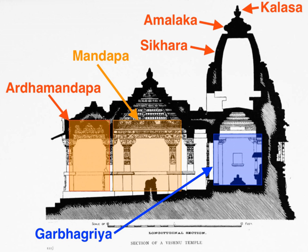The Kalinga style of architecture flourished in the eastern Indian state of Odisha and northern Andhra Pradesh. The style consists of three distinct types of temples: Rekha Deula, Pidha Deula, and Khakhara Deula. Deula means temple in the local language. The former two are associated with Vishnu, Surya and Shiva temples, while the third is mainly associated with Chamunda and Durga temples. The Rekha Deula and Khakhara Deula house the Sanctum Sanctorum, while the Pidha Deula constitutes outer dancing and offering halls. Prominent examples include the Lingaraj temple of Bhubaneswar and the Jagannath temple of Puri. The Konark Sun Temple is a living example of Pidha Deula.